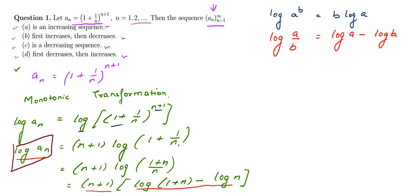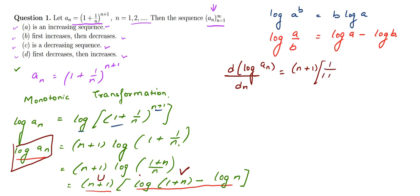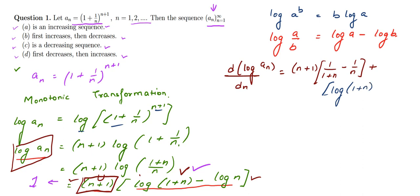We differentiate log(a_n) with respect to n. The right-hand side has a product u·v format, so we apply the product rule: keep the first part (n + 1) and differentiate the log part, giving [1/(1 + n) − 1/n], then keep the second part and differentiate the first, giving 1·[log(1 + n) − log(n)].